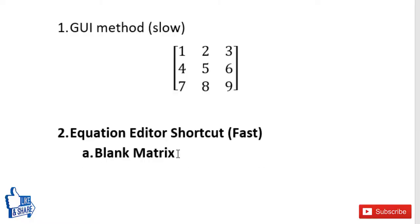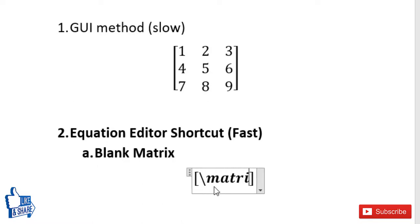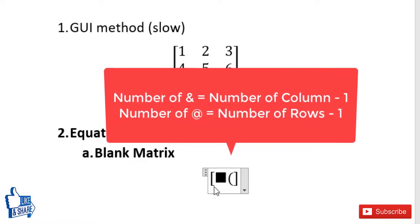Press Alt+= to get inside the equation editor. I want this matrix inside square braces, so I put square braces and will place the matrix inside. To get a blank matrix, type \matrix and then inside the braces specify the number of rows and columns.